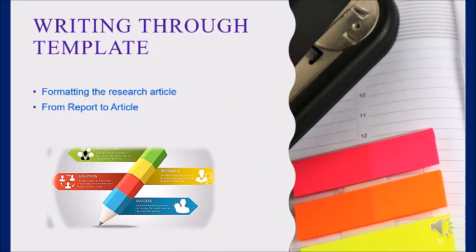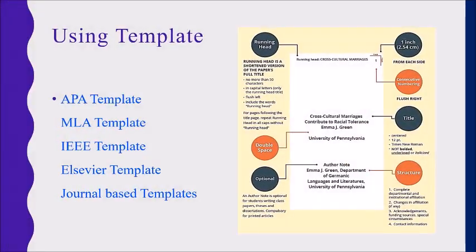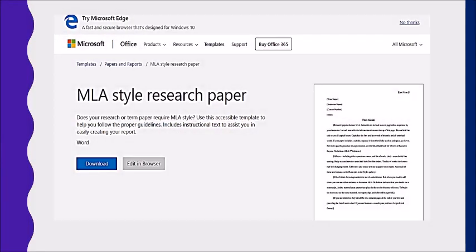Another method of writing a research paper is through the templates provided by publishers. You can use templates provided by the publishers of the particular journal. If templates are not available, follow the standards given by the research organizations. Examples include: APA template, MLA template, IEEE template, and Elsevier template. Even Microsoft Office software has templates. The advantage is that you can create your presentation in a standard format. Here is an example of an MLA style research paper available in Microsoft Word.